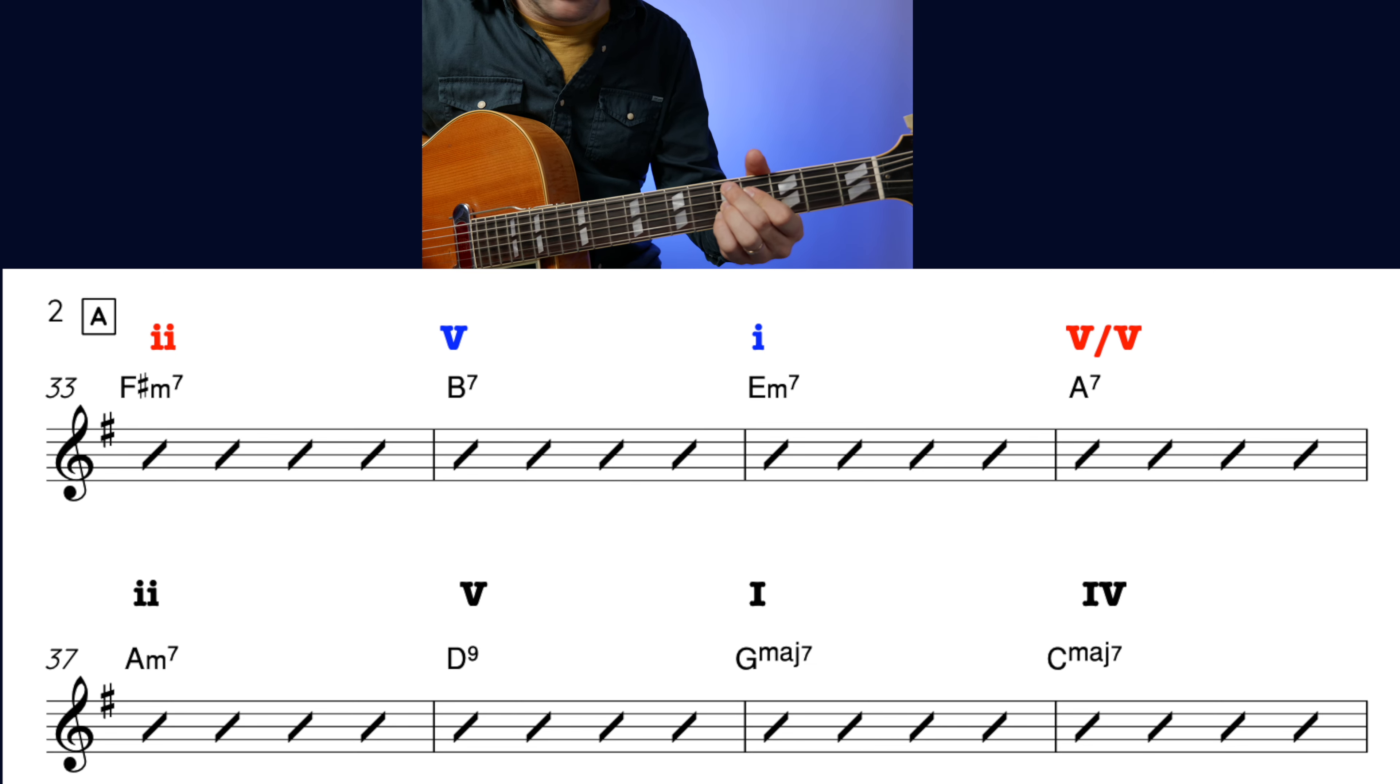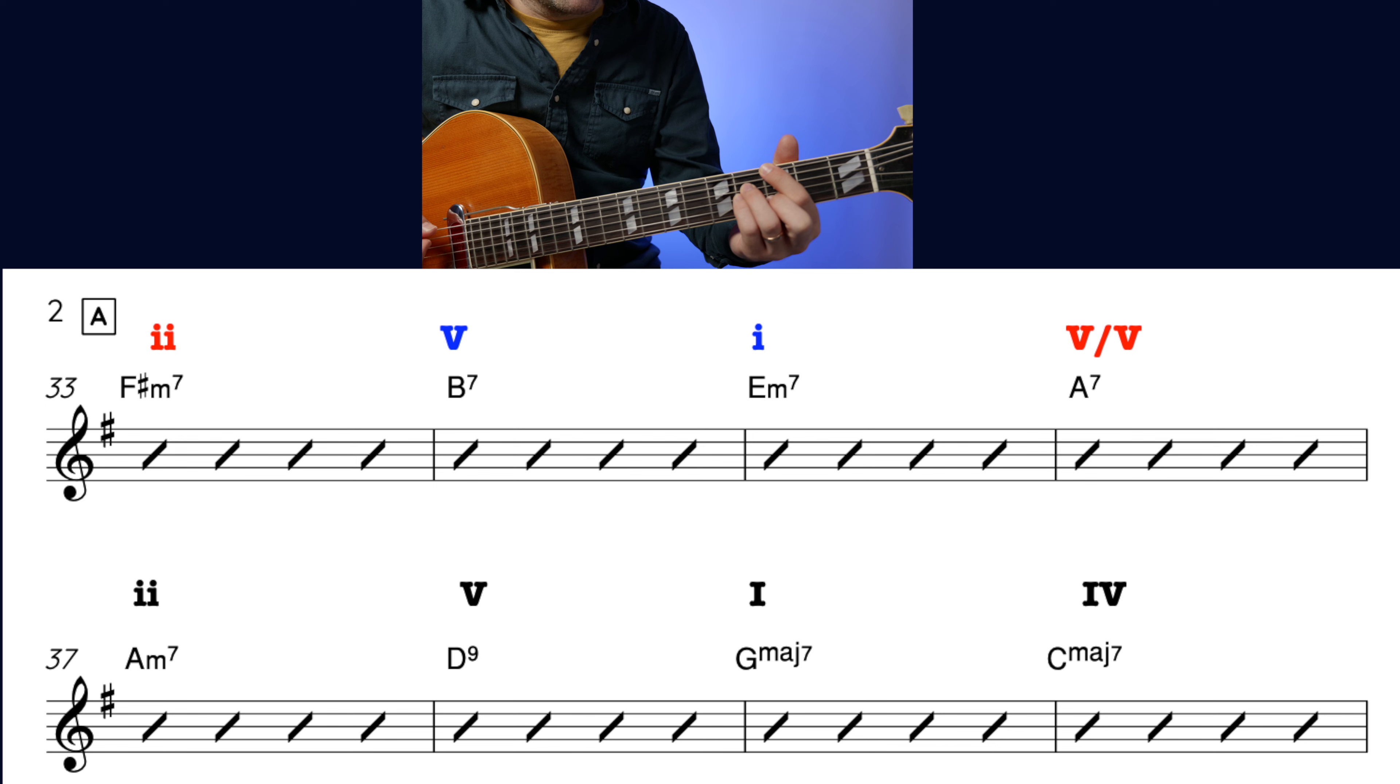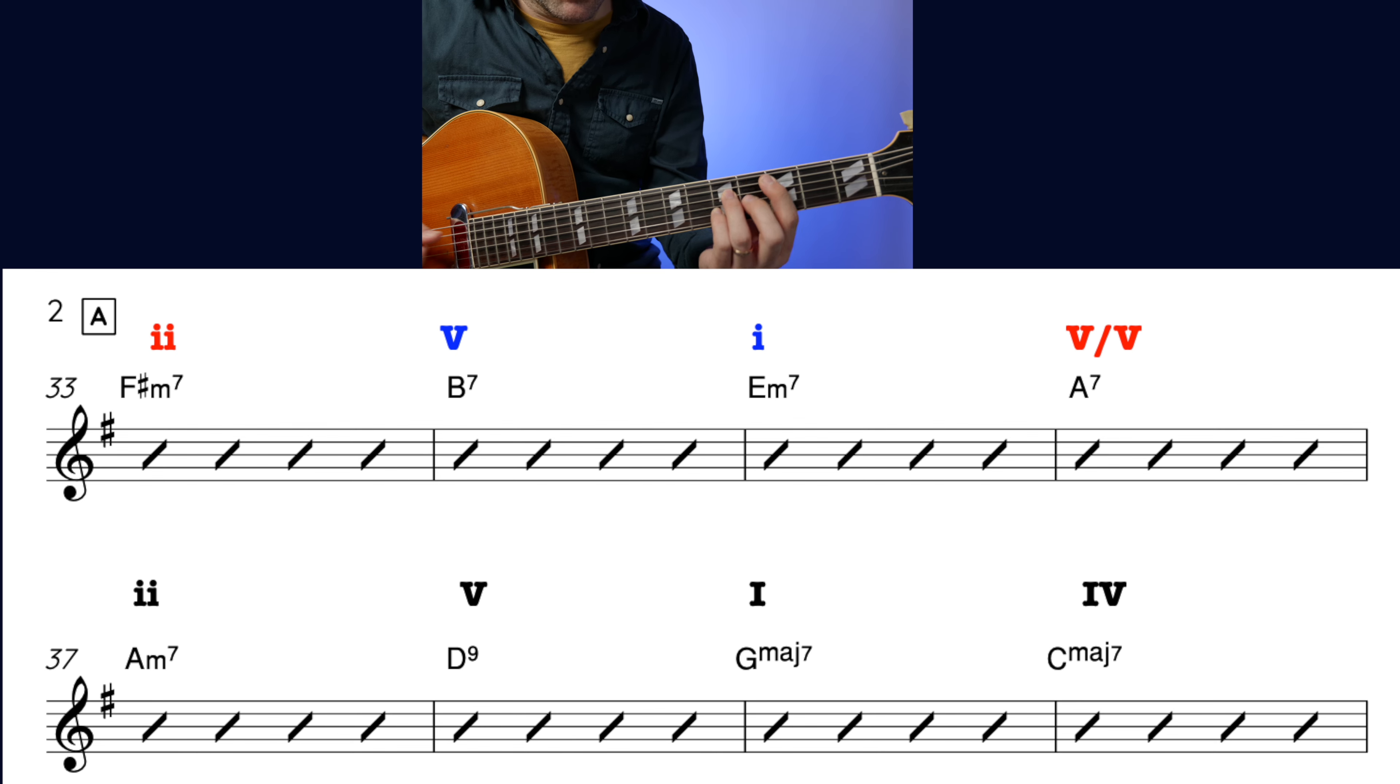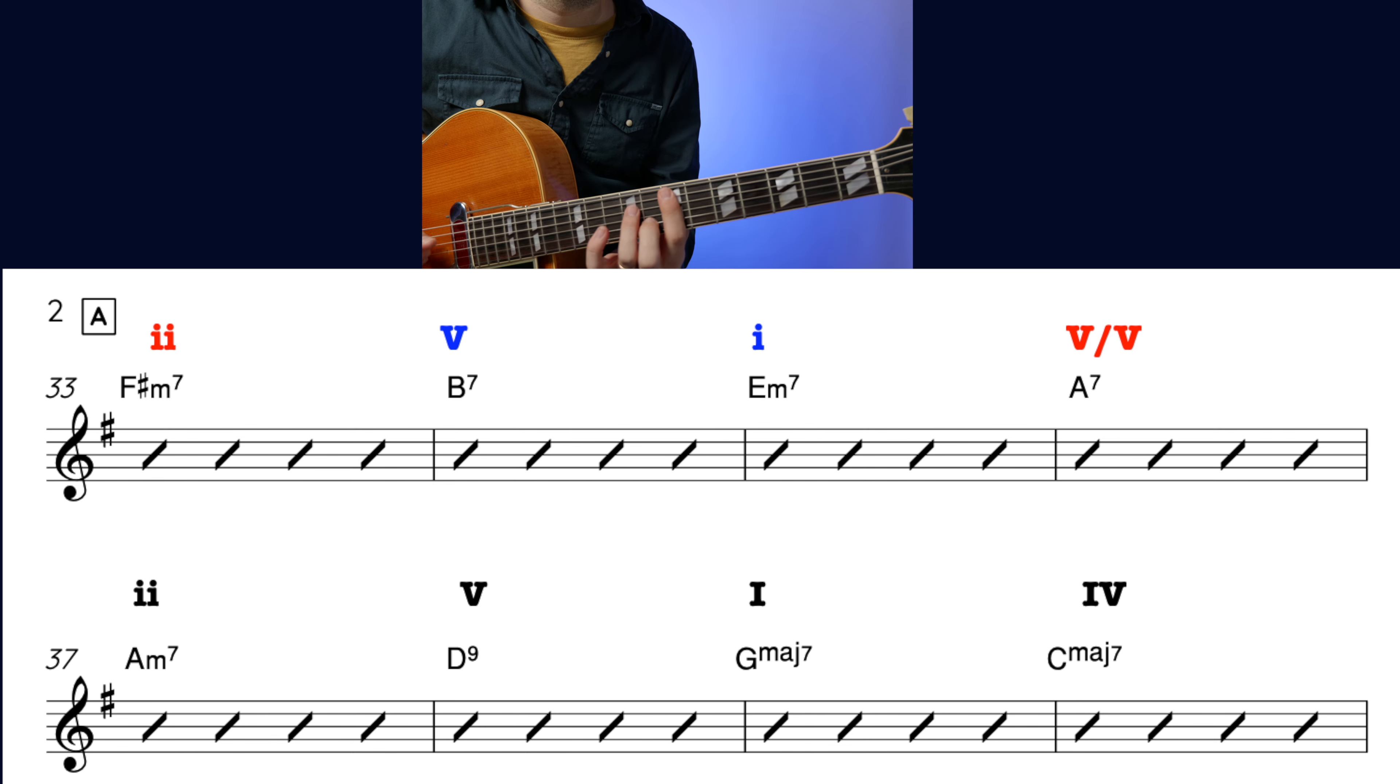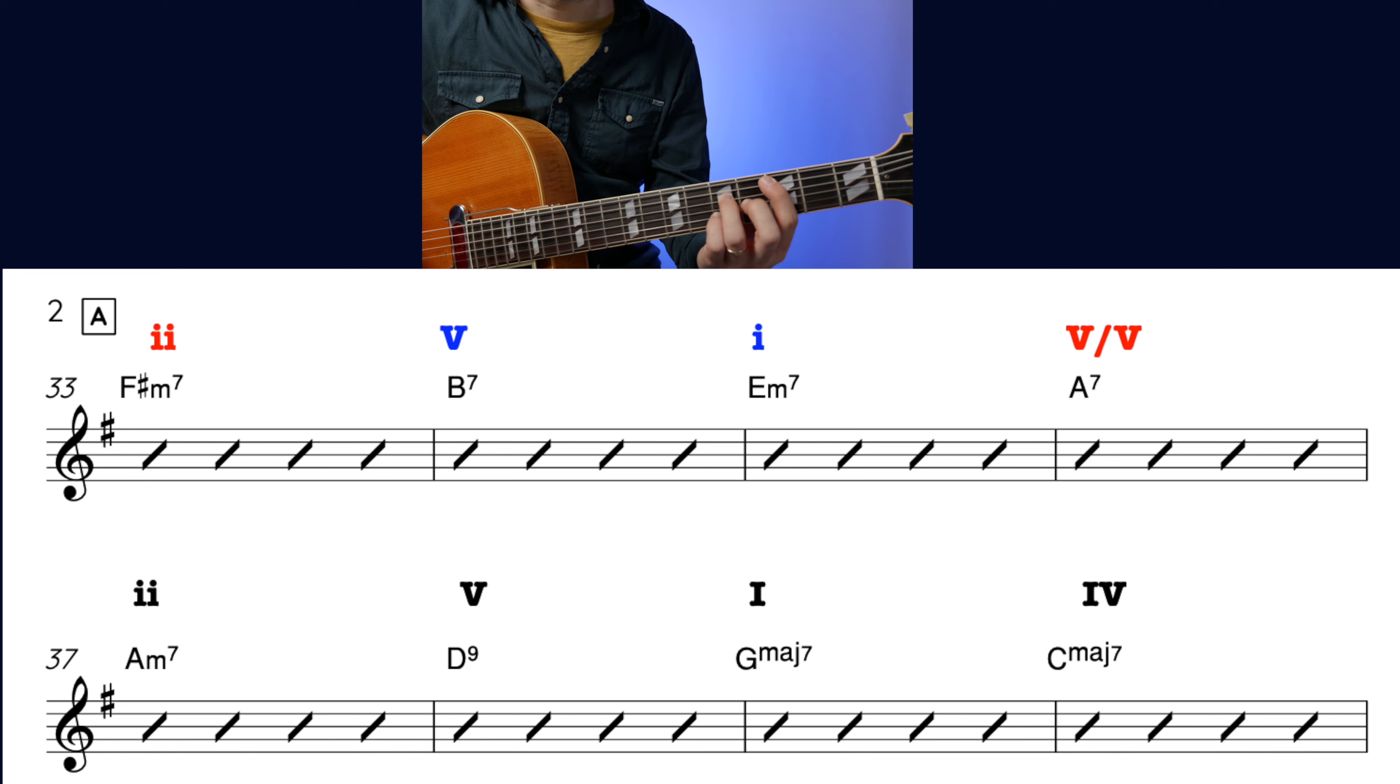So it's a 2-5-1 in the relative major of E minor. So A minor 7 is chord 2. D9 is a dominant, essentially, that's chord 5. Leading to G major, chord 1. And then moving to chord 4. You might recognize that whole progression from Autumn Leaves there. So we start out in E minor, resolve. Then the A7 helps us get to D9, which leads us to G. That 4 chord straight away sets up, let's go back to E minor.